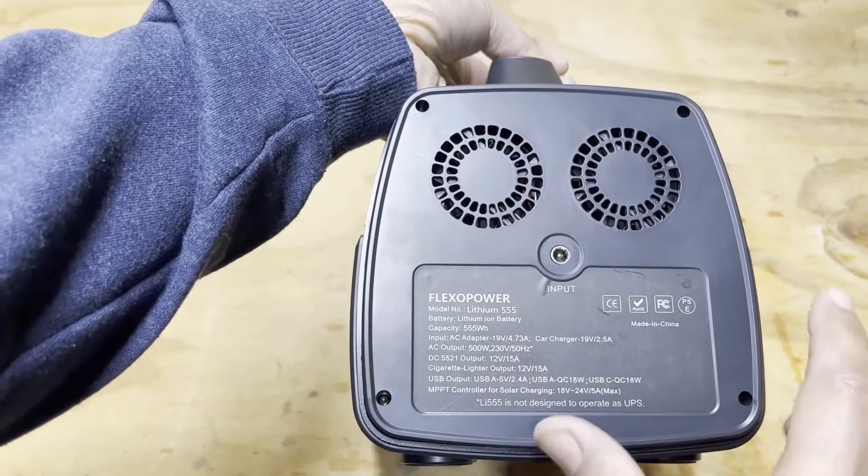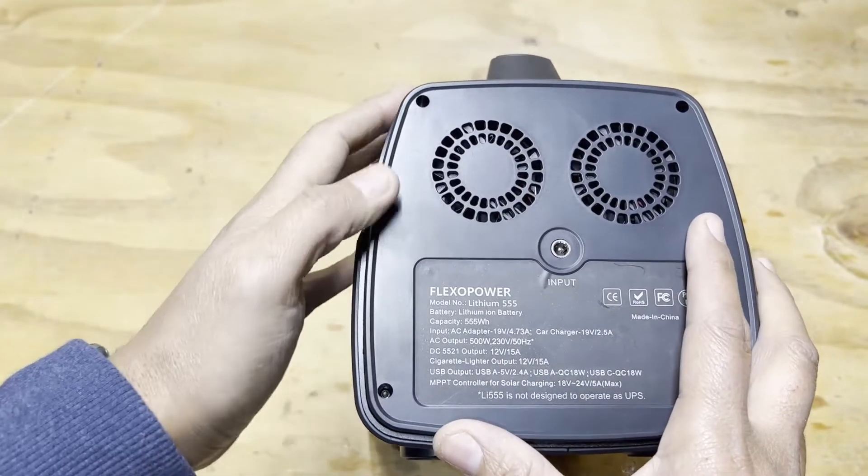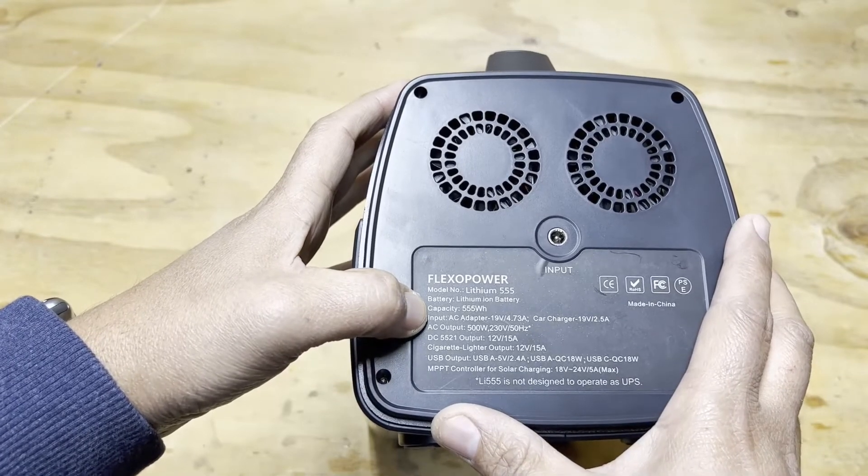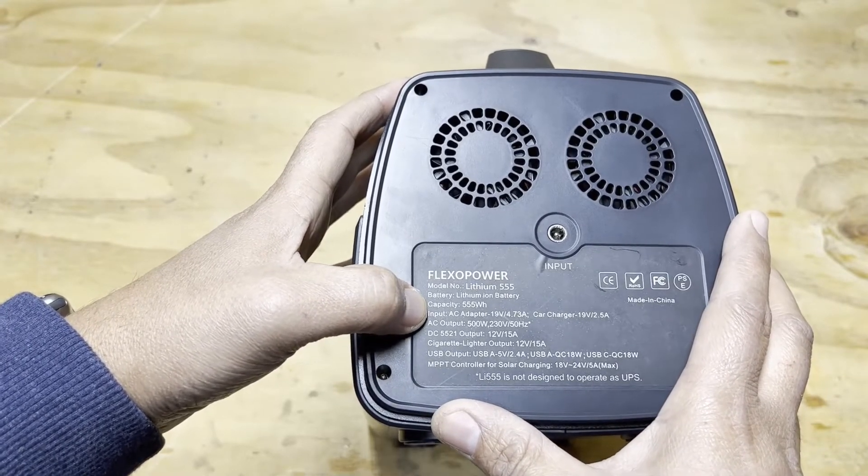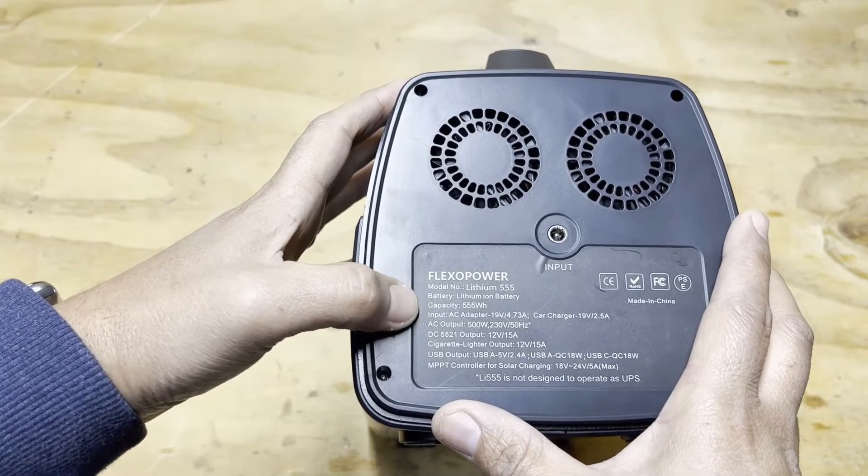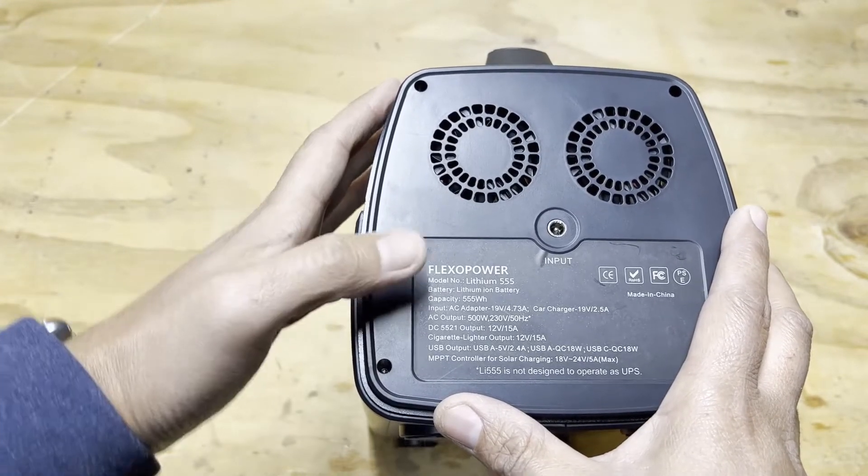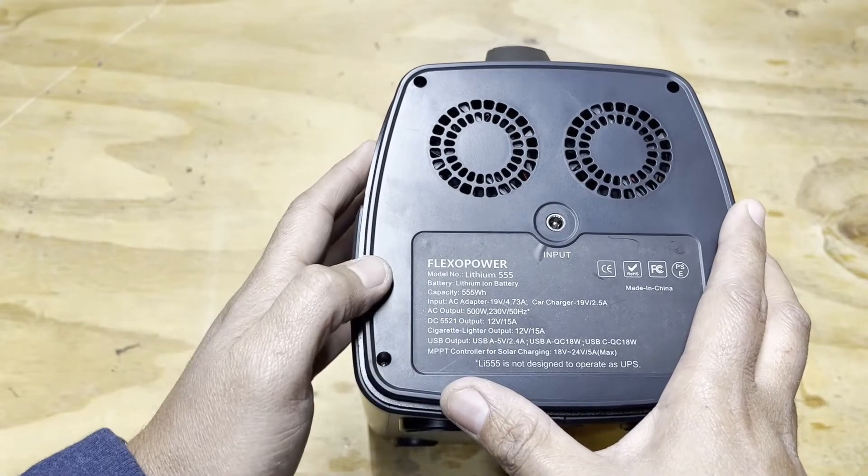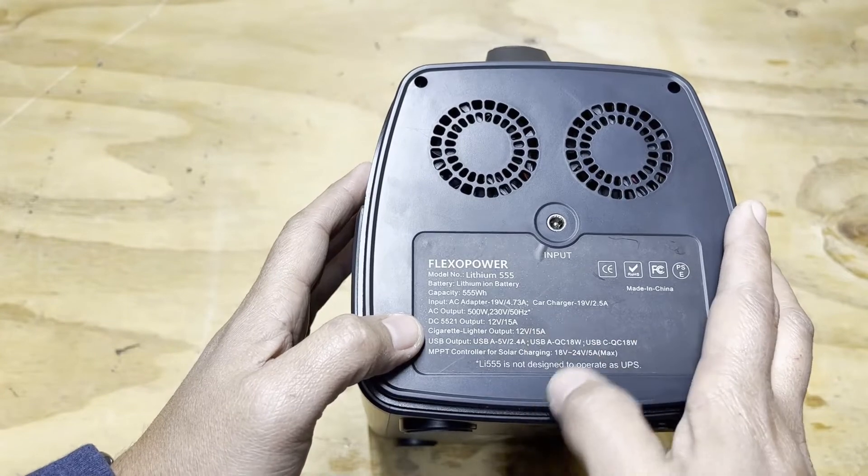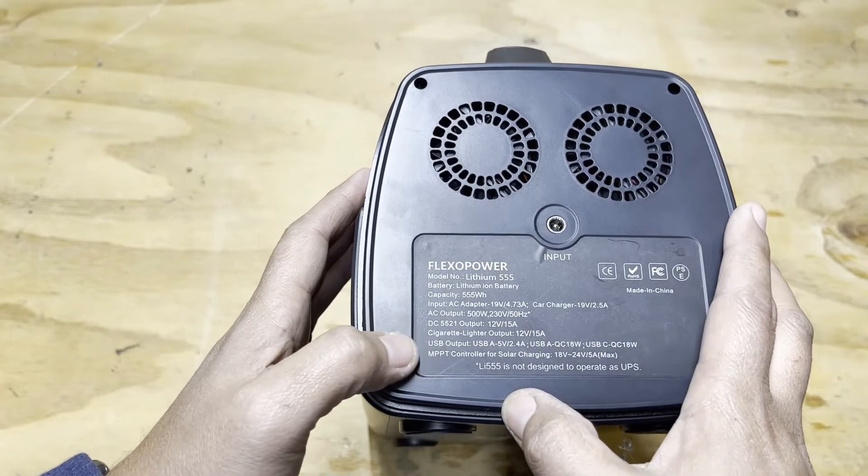The specs are at the back here. I'll just read them for you. It's a lithium-ion battery. The capacity is 555 watt hours, which is 150,000 milliamp hours at 3.7 volts. The AC output is 500 watts. Your DC output is 12 volts at 15 amps, and so is your cigarette lighter.